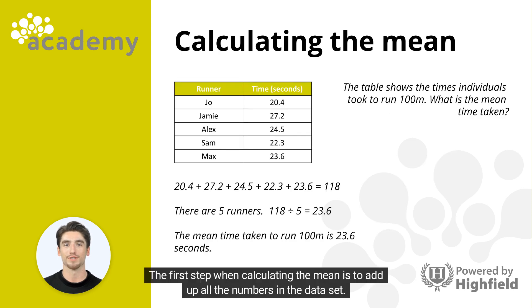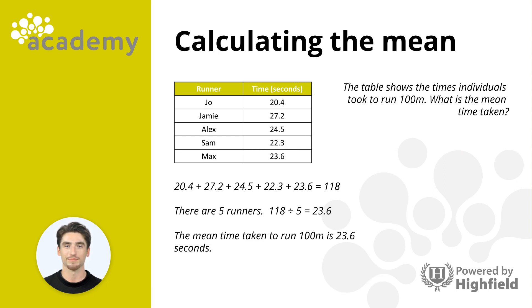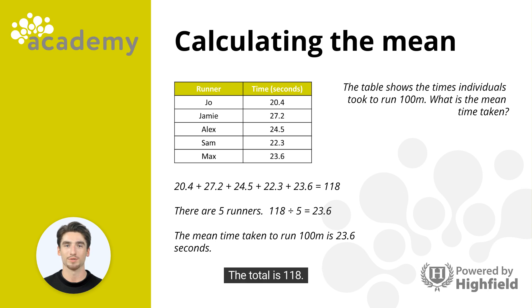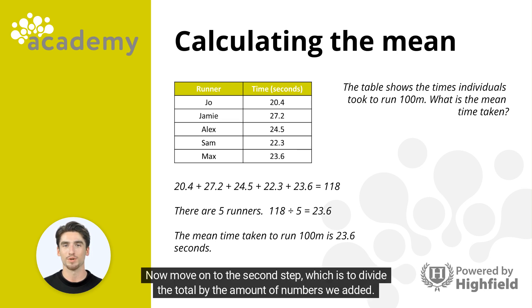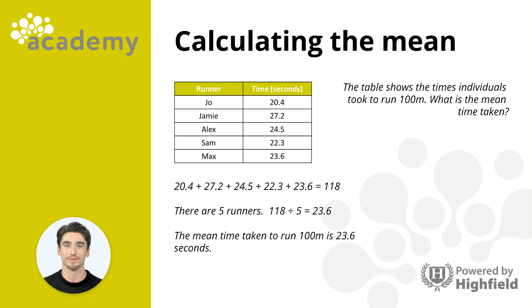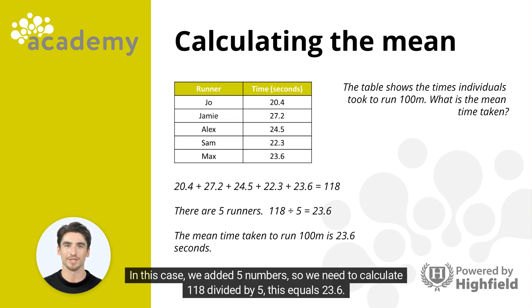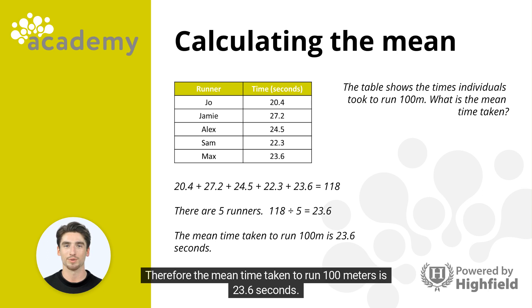Let's take a look. The first step is to add up all the numbers in the dataset: 20.4, 27.2, 24.5, 22.3, and 23.6. The total is 118. Now for Step 2: divide the total by the amount of numbers we added. We added 5 numbers, so we calculate 118 divided by 5, which equals 23.6. Therefore, the mean time taken to run 100 meters is 23.6 seconds.